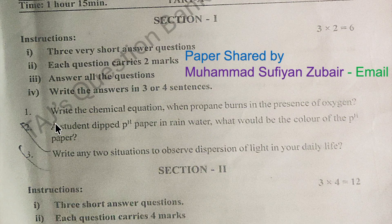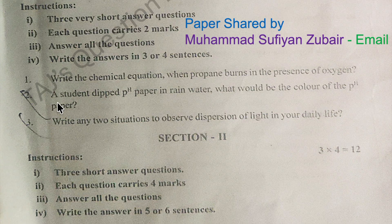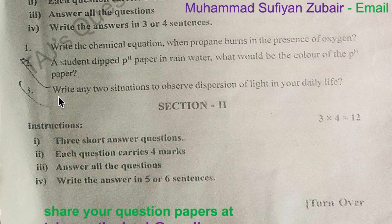In section 1, the first question is: write the chemical equation when propane burns in the presence of oxygen. The second question is: a student dipped pH paper in rainwater — what should be the color of the pH paper? The third question is: write any two situations to observe dispersion of light in your daily life.